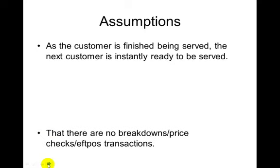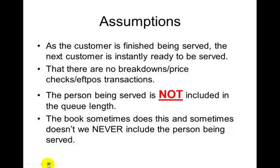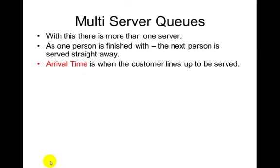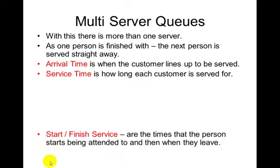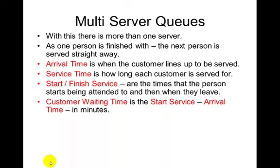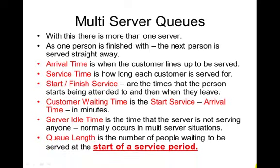We've got a whole stack of assumptions. As soon as one person's finished being served, the next person's there straight away. There's no breakdowns. The person being served is not counted in the queue. In multi-server queues, as soon as one person finishes the next person is there. Arrival time is when the customer lines up. Service time is how long it takes to be served. Start and finish are when service begins and ends. Customer waiting time is start service minus arrival time, in minutes. Server idle time is when the server is doing nothing.